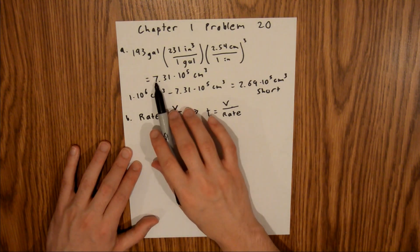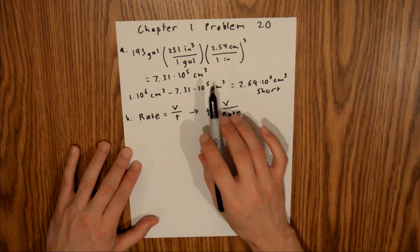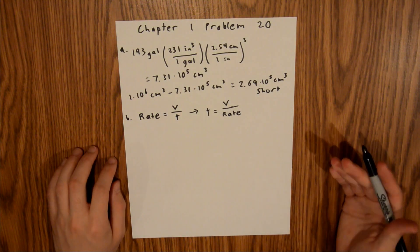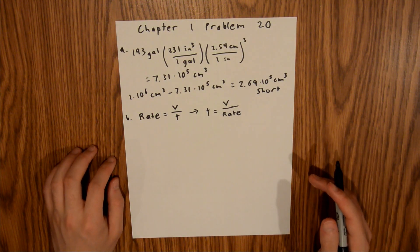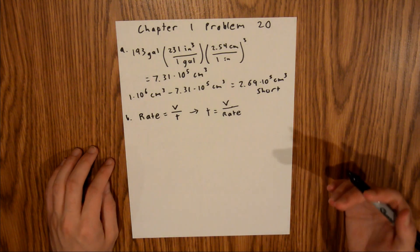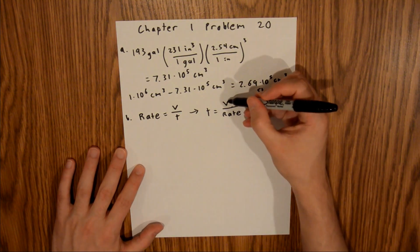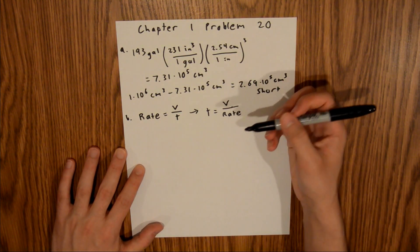We know our volume, which we just found right here in cubic centimeters, but we are given the rate in grams per minute, and we're also given a density, so that's a mass per time, which then we can convert to a volume per time, and if we have volume over volume per time, that'll give us time.